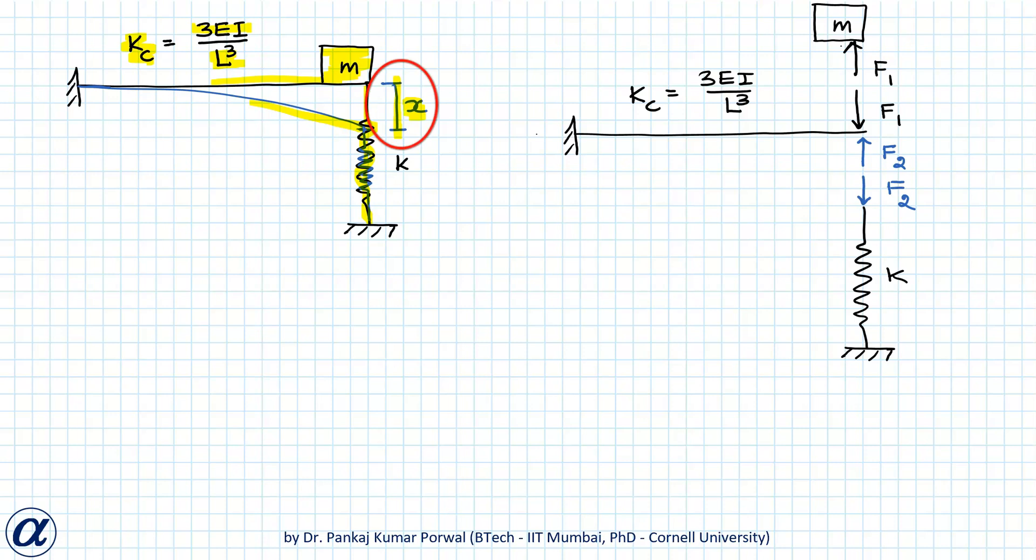If we look at the forces at the free end of the beam and in the spring, between the mass and the cantilever there will be a force F1, which will be upward for mass and downward for the cantilever. If the spring force is F2 in downward direction, then correspondingly there will be F2 in upward direction at the free end of the cantilever.